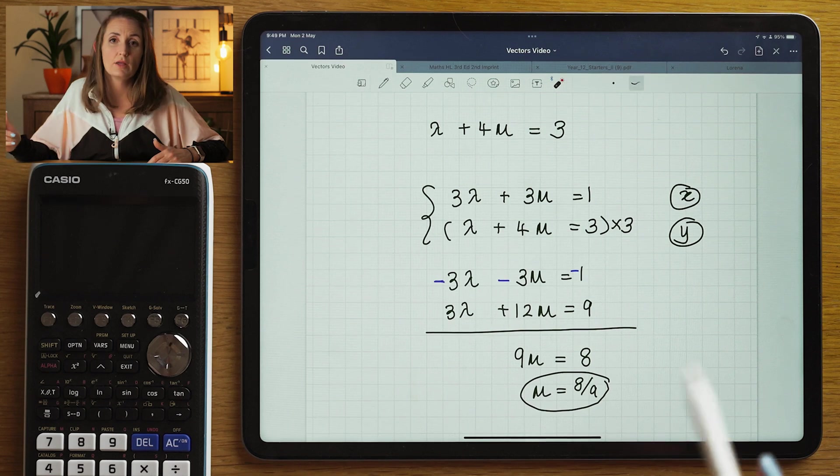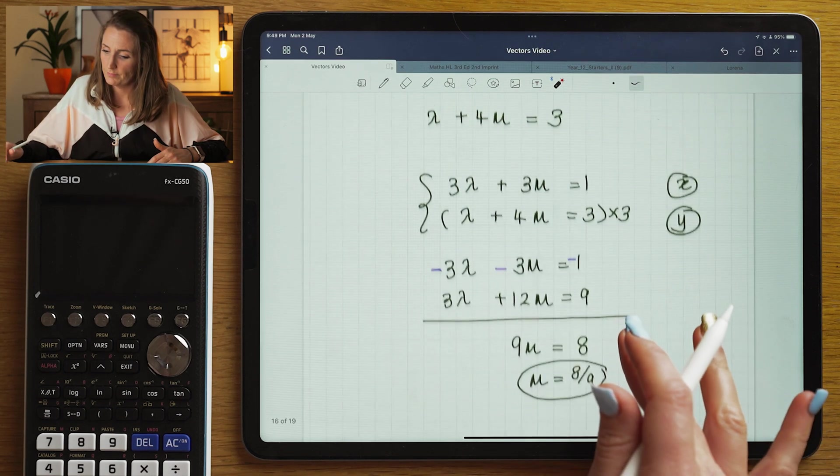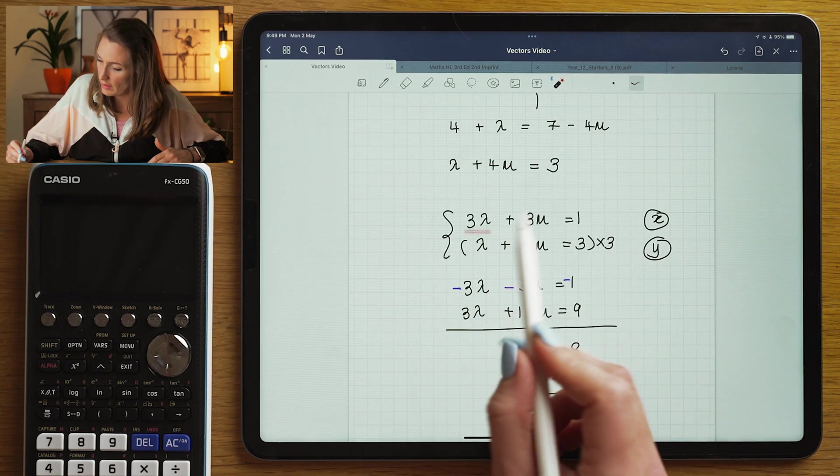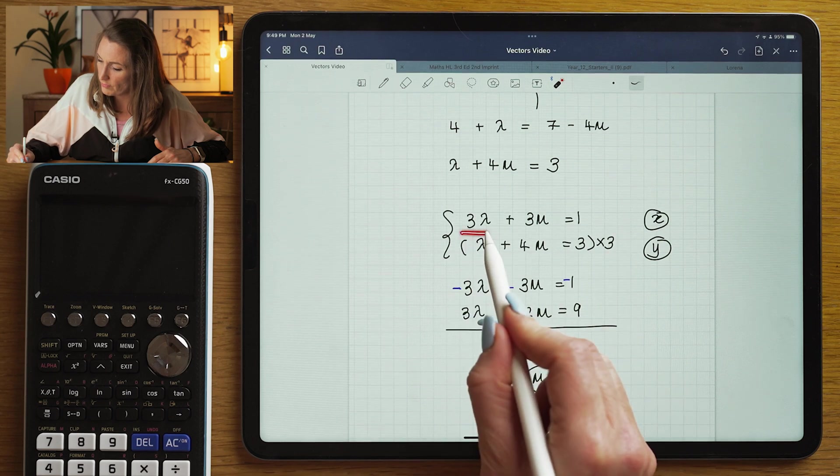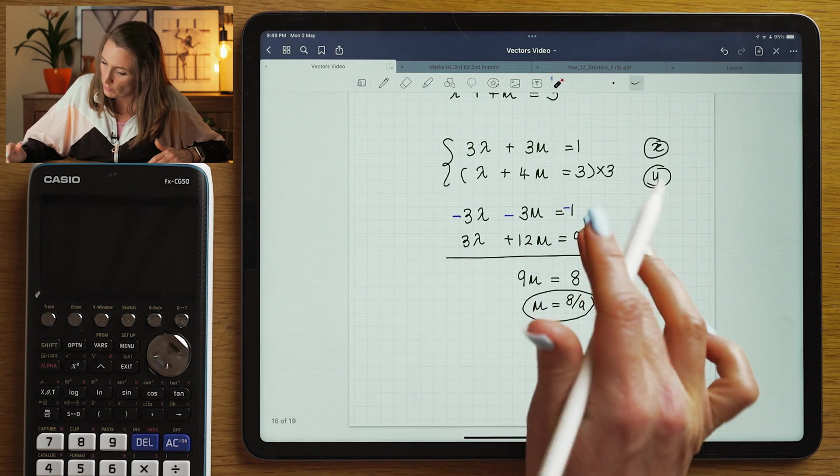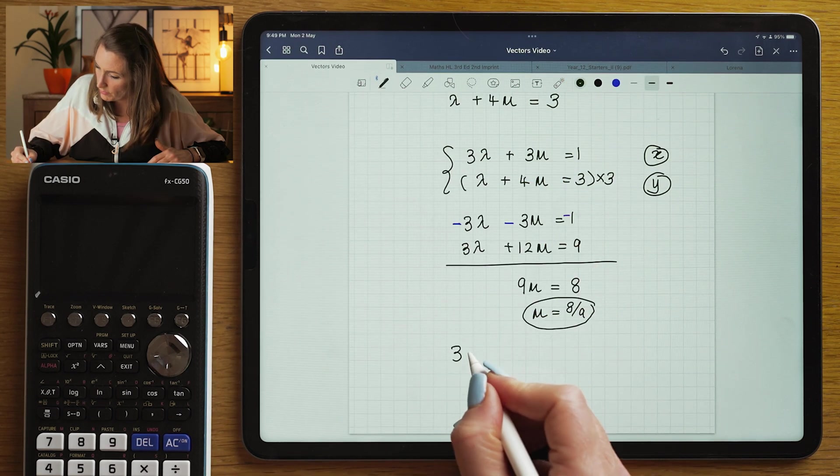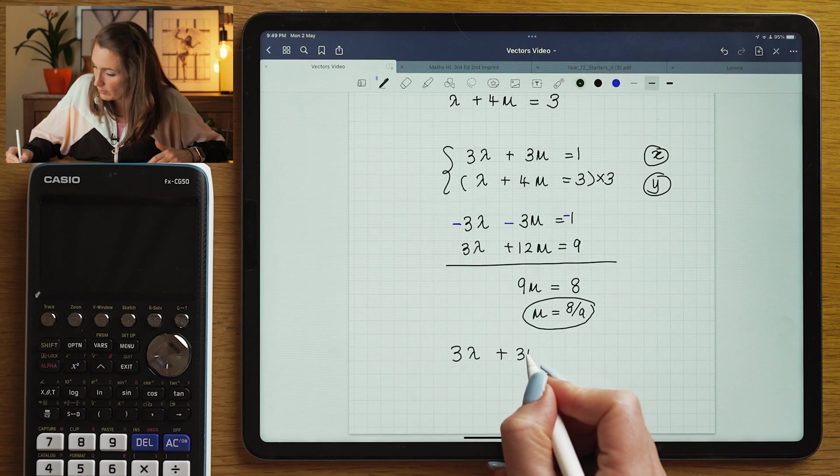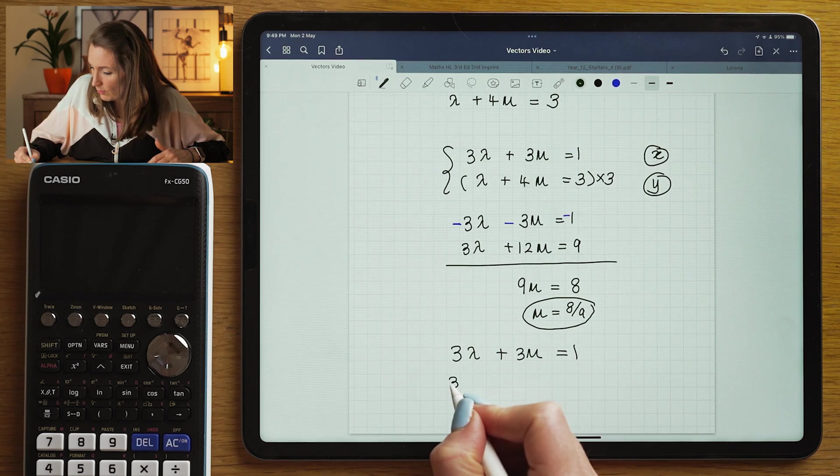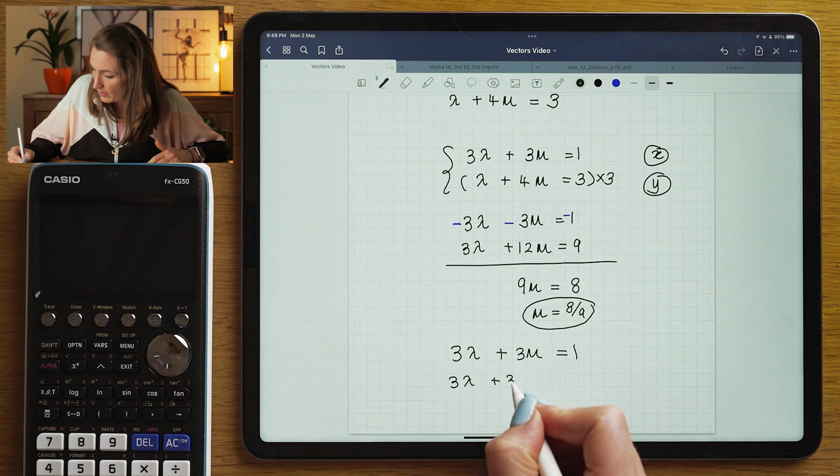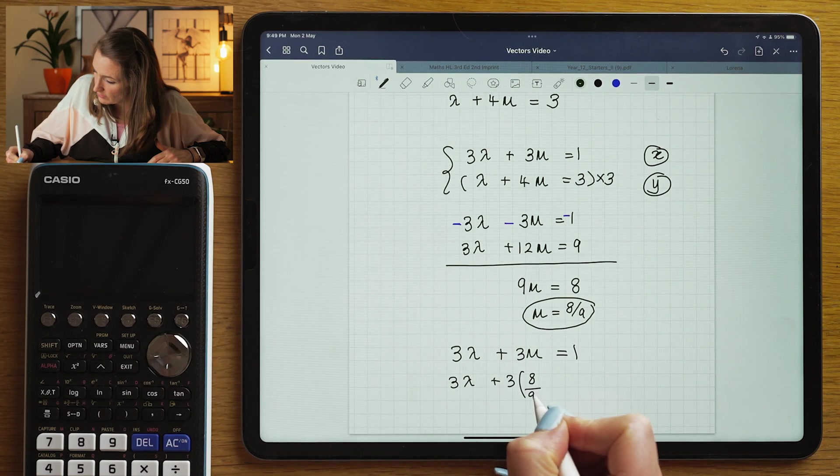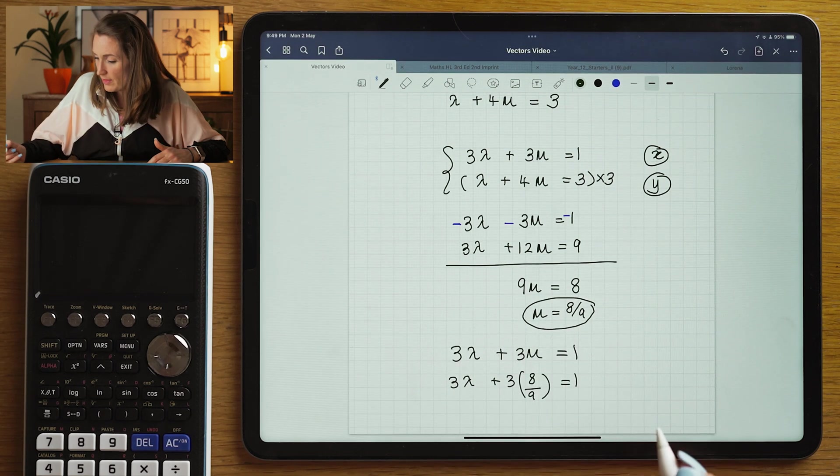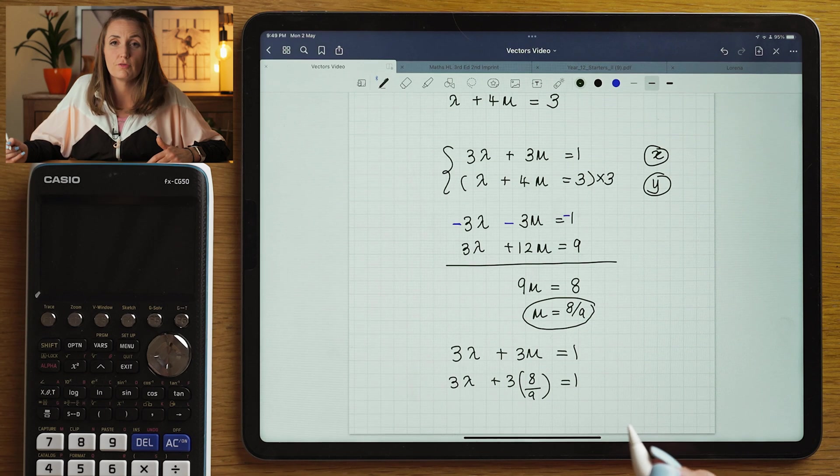Now I know mu, I'm going to find lambda. Using the first equation here, I know that 3 lambda plus 3 mu is equal to 1. So 3 lambda plus 3 mu is equal to 1, but I also have worked out that mu is 8 divided by 9. That's going to allow me to solve for lambda.